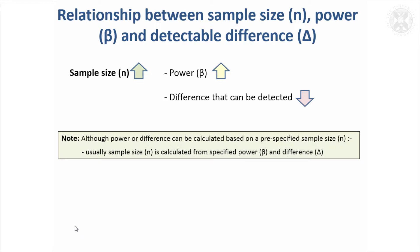This slide summarizes the relationship between sample size, power, and the difference that can be detected. The bigger the sample size, the more power it gives you, and the smaller the difference between the groups that can be detected.